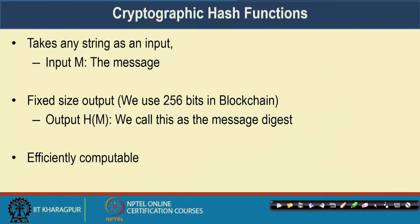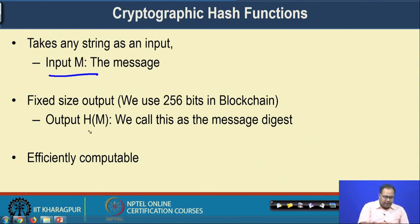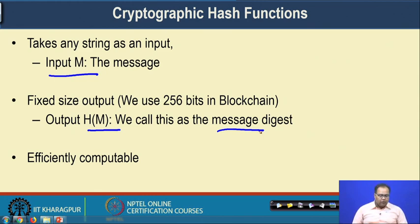Let us start with the concept of the cryptographic hash function. A cryptographic hash function takes an input — the message M — and produces an output H(M), which we call the message digest. In blockchain, this message digest is a fixed-size output, and we generally use 256 bits of output. The property of this kind of hash function is that it is efficiently computable.